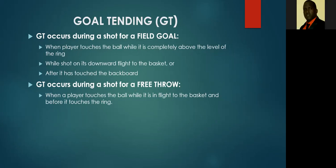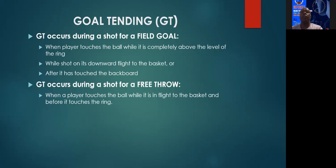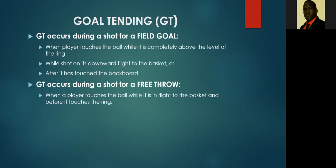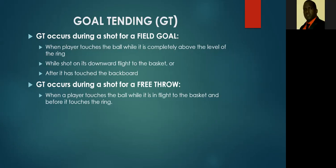The shot for field goal ends when a player releases the ball, when it strikes the ring, when it strikes the backboard, or when it strikes the floor. However, remember — team control and continuation do not end as long as the player who shoots the ball still has one foot on the deck and one up. That person is still considered to be in continuous motion. Goaltending occurs during a shot for field goal when the player touches the ball while it is completely above the level of the ring.